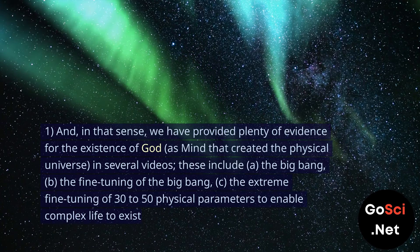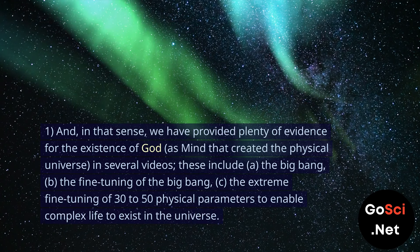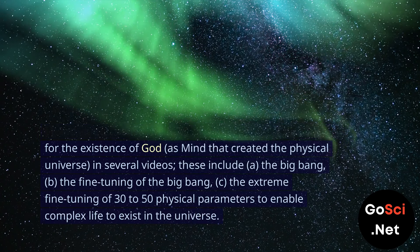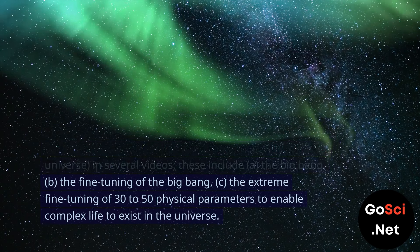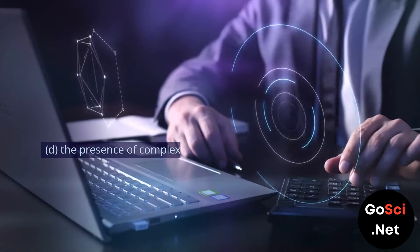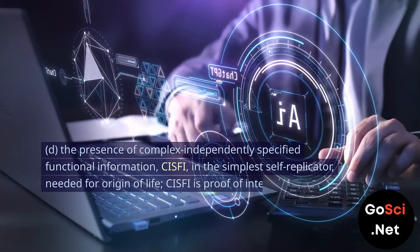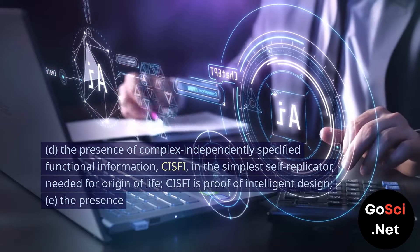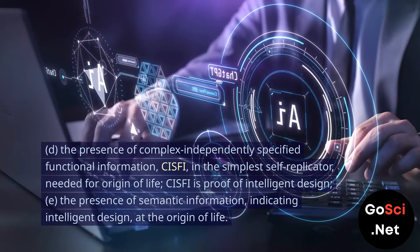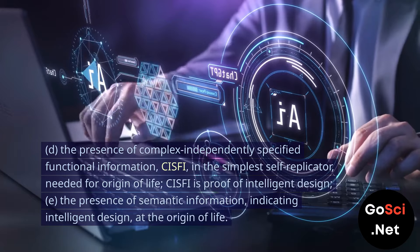These include: a. The Big Bang. b. The fine-tuning of the Big Bang. c. The extreme fine-tuning of 30 to 50 physical parameters to enable complex life to exist in the universe. d. The presence of complex independently specified functional information (CISFI) in the simplest self-replicator, needed for origin of life. CISFI is proof of intelligent design.